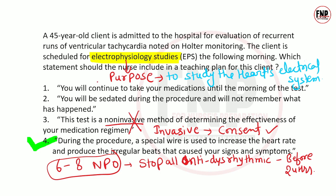Option 2 says we will give the client sedatives — this is also incorrect. During the EPS procedure, when arrhythmia is induced via the wire, the client is continuously asked how their heart rhythm feels. The client's verbal response is important for diagnosis, so no sedatives or anesthesia are given. Options 1, 2, and 3 are all incorrect.